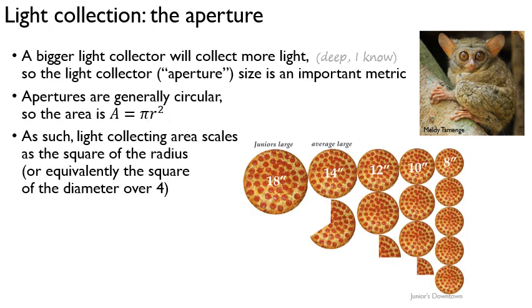Equivalently, you'll see the equation in the book where they have instead of radius, diameter over two squared. Same thing. The light collecting area scales as the square of the radius. So if you double the radius, you get four times the collecting area. That's important to note when you're looking at the aperture sizes. The radius or the diameter will be quoted, but really you have to square that to compare the light collecting area.